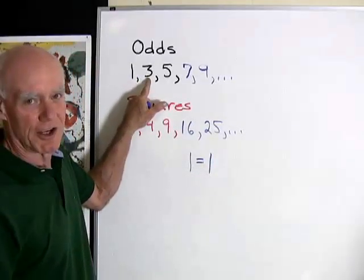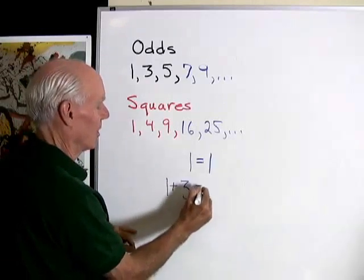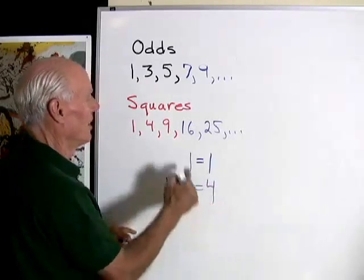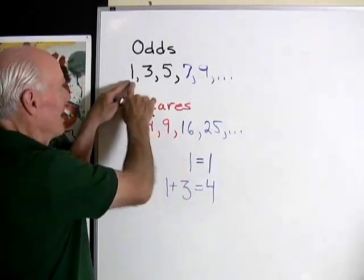If I add the first two odd numbers, 1 plus 3, look what I get. 1 plus 3 is equal to 4, and that's the second number in the sequence of squares.